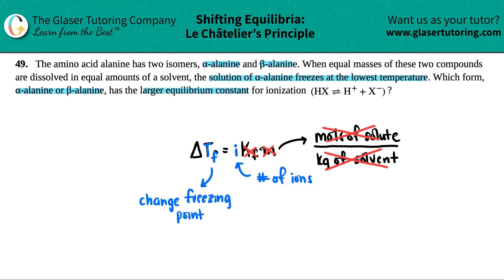In terms of the difference, since alpha alanine freezes at a lower temperature, that has everything to do with the i value or the number of ions. Remember that a freezing point can only go lower, never higher than the true freezing point. For example, the freezing point of liquid water is zero degrees Celsius. You can never raise a freezing point, you can only lower it.